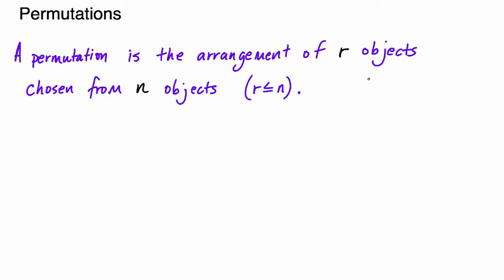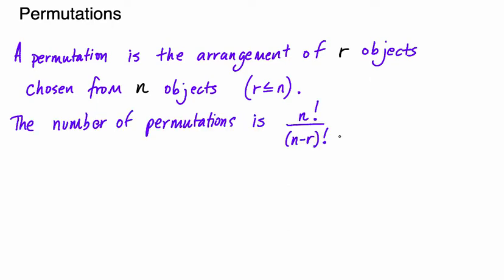A permutation is the arrangement of r objects chosen from n objects. So if you've got 10 balls, how many ways can you choose 6 of those balls? The number of permutations is given by this formula, which is n factorial over n minus r factorial.